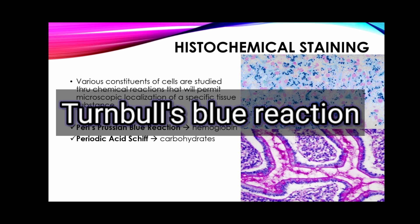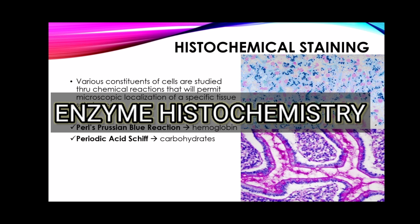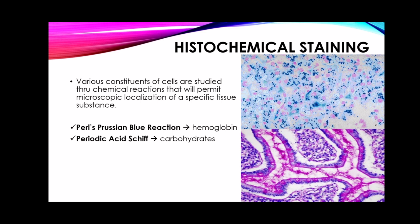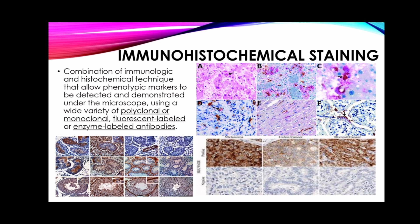In enzyme histochemistry, the active reagent serves as a substrate upon which the enzymes act, and the final coloration is produced from the substrate rather than the tissue. For immunohistochemical staining, this is a combination of immunologic and histochemical techniques that allow phenotypic markers to be detected and demonstrated under the microscope using a wide range of polyclonal or monoclonal, fluorescent-labeled, or enzyme-labeled antibodies.